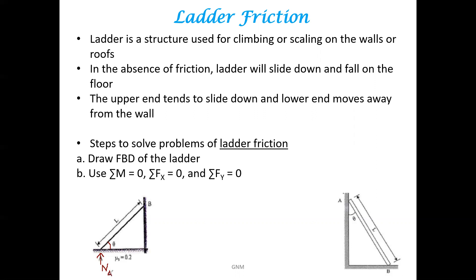Similarly, for end B of the ladder, which is in contact with the vertical wall, contact reaction NB will act from the wall towards the ladder. Weight of the ladder will act from its center vertically downward. And as the coefficient of static friction is mentioned for the floor, there will be a friction force acting between the ladder and the floor. We can call this the friction force for surface A.